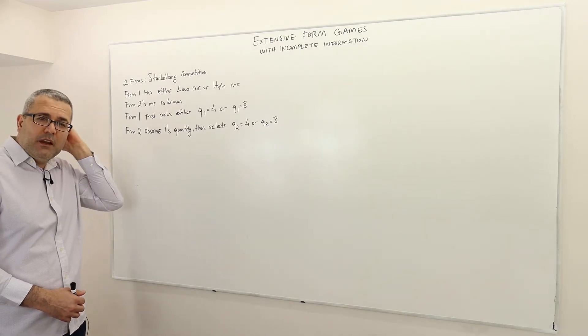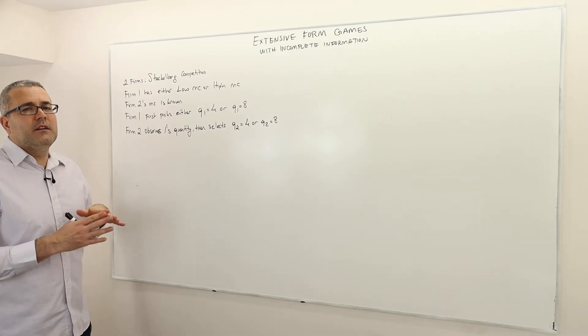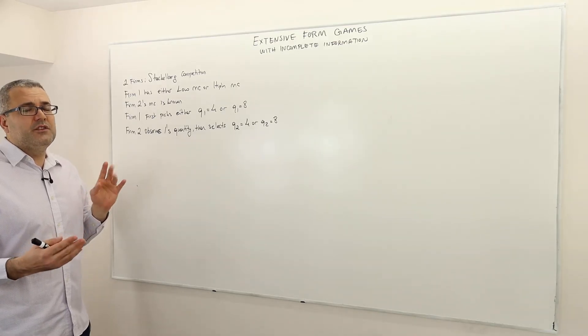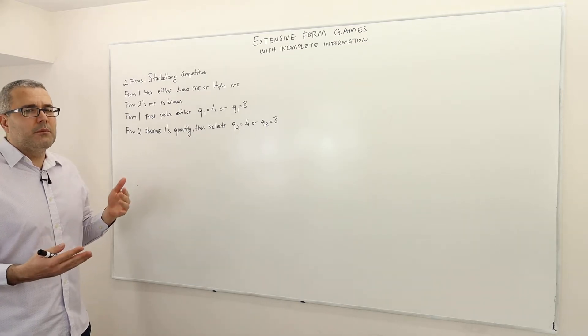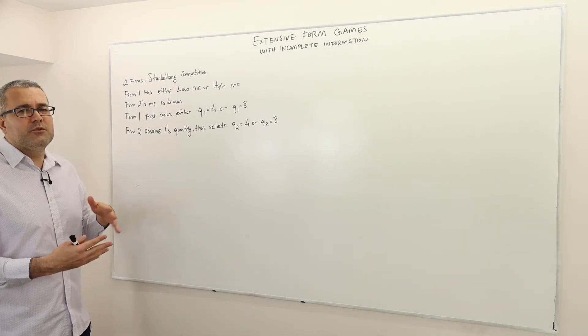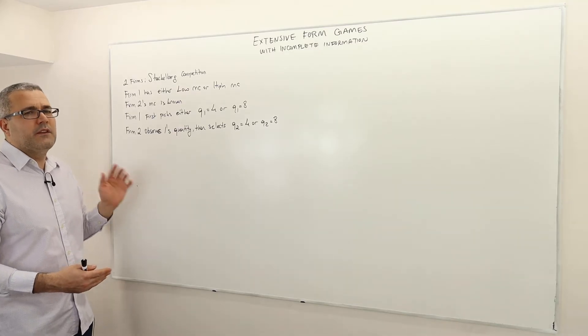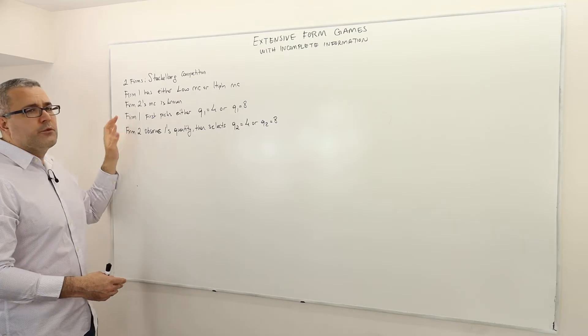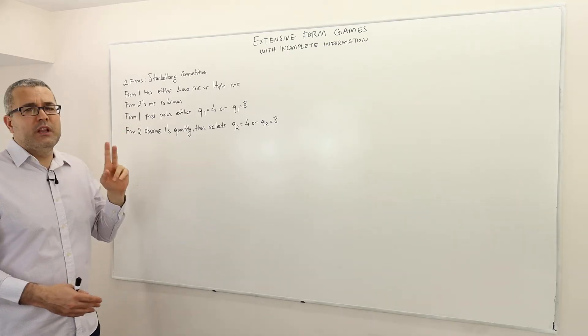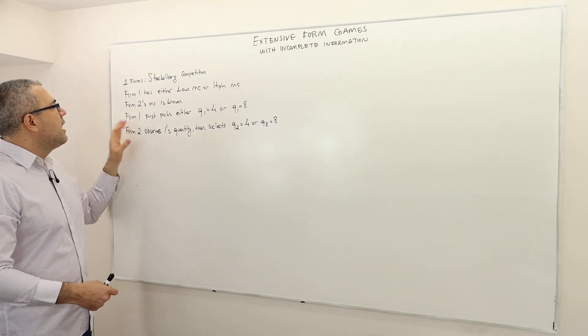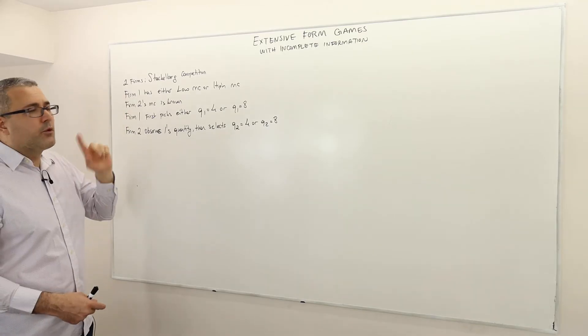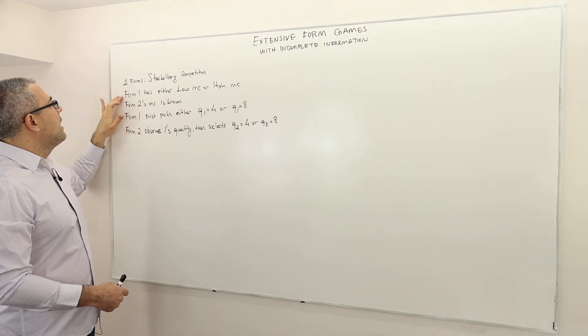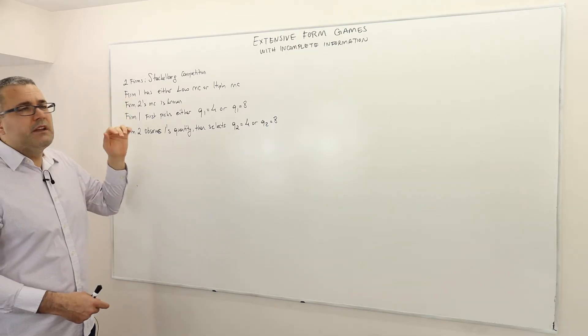But I'm going to simplify the game because if we assume infinitely many strategies for each player the game tree is going to be complicated. I would like to draw the game tree of this game, so I'm going to simplify it and assume that firm 1 and firm 2 can only choose two levels of quantity. Before mentioning the quantity choices, what is the incomplete information here?